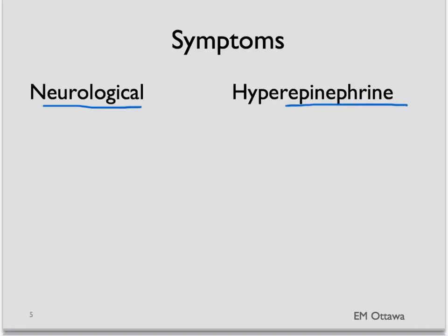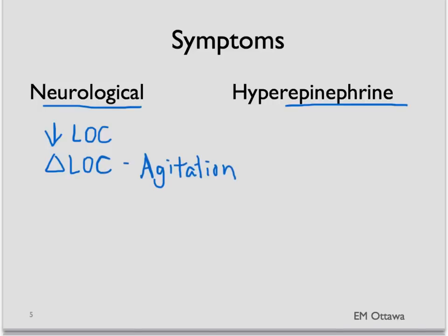In terms of neurological symptoms, they can include decreased level of consciousness, leading to lethargy or coma. They can also have a change in level of consciousness such as confusion and agitation. They can cause seizure, and sometimes it's so tricky that it causes focal neurological findings that mimic a stroke.